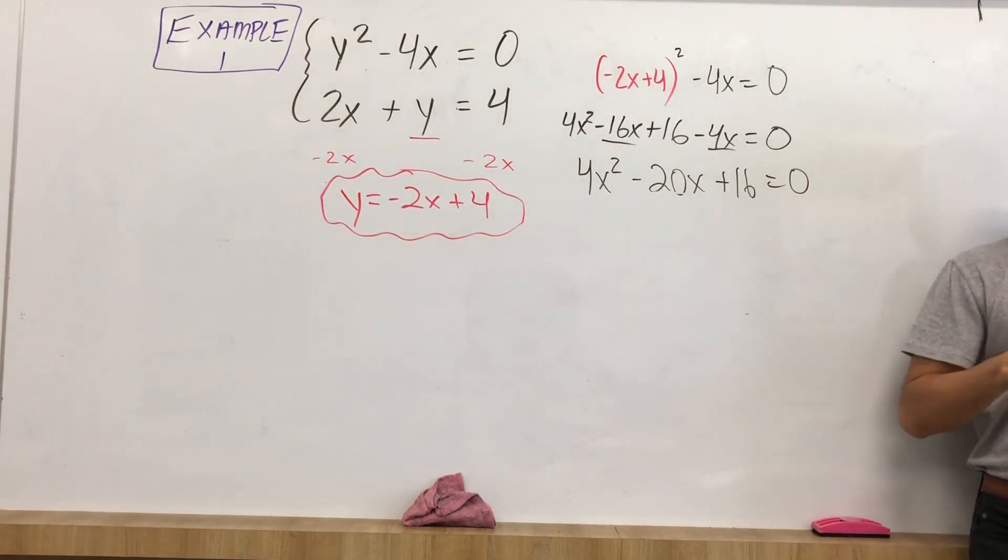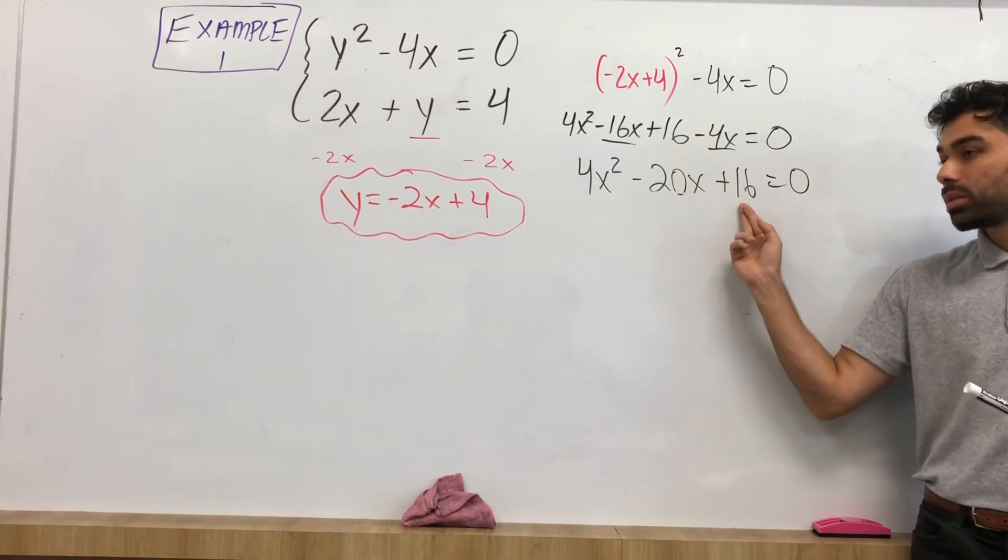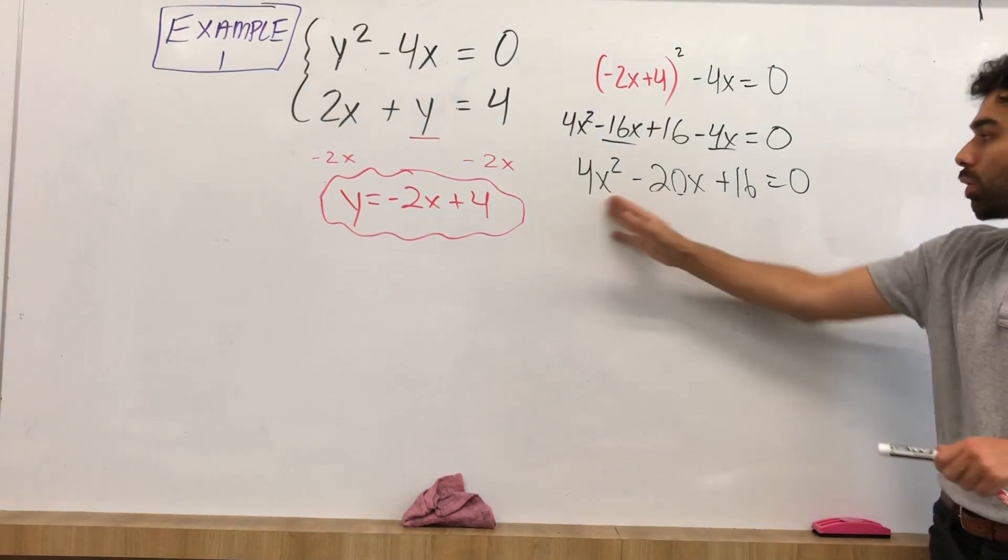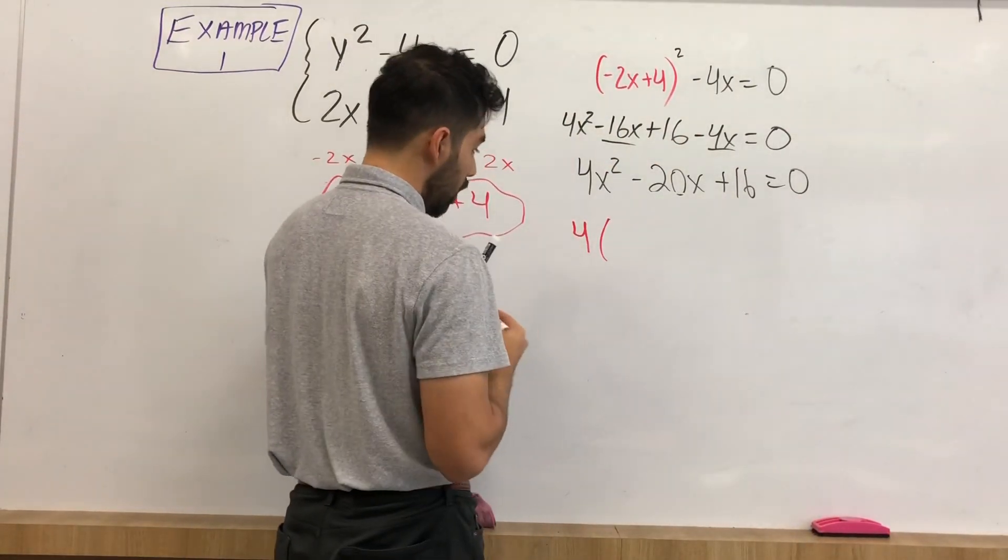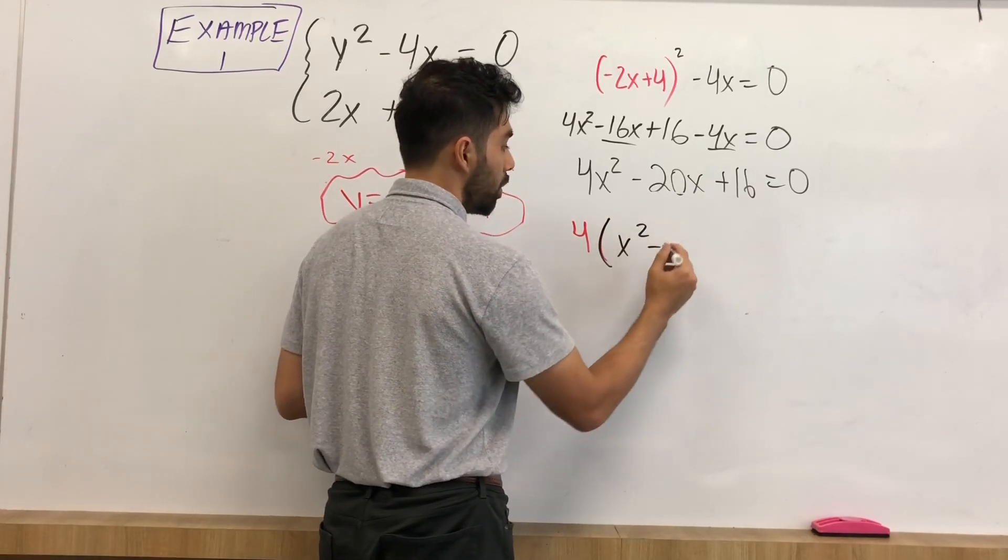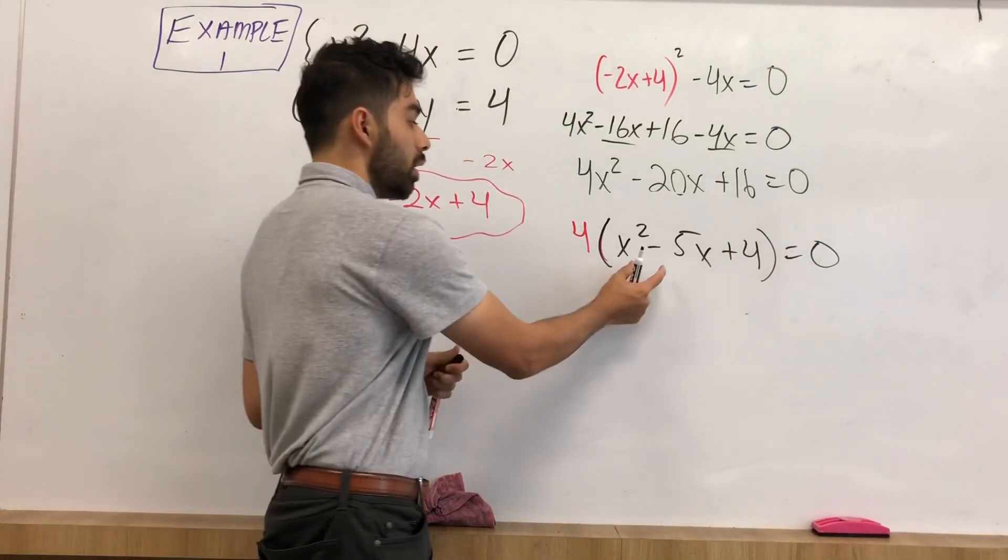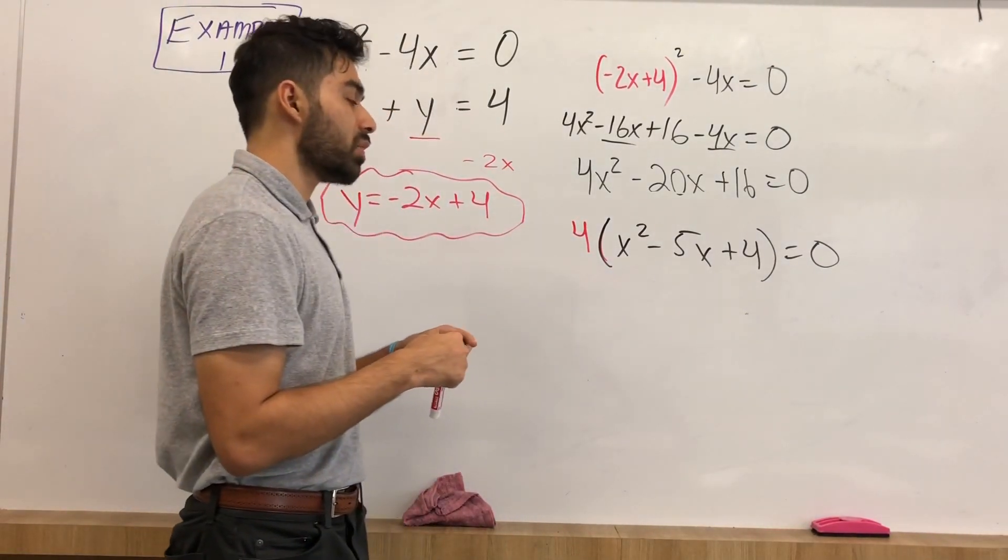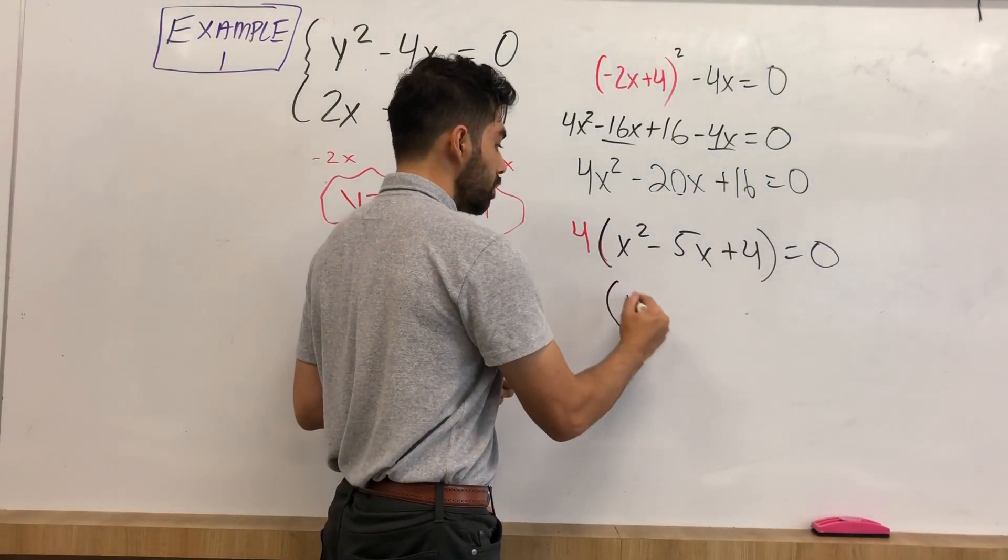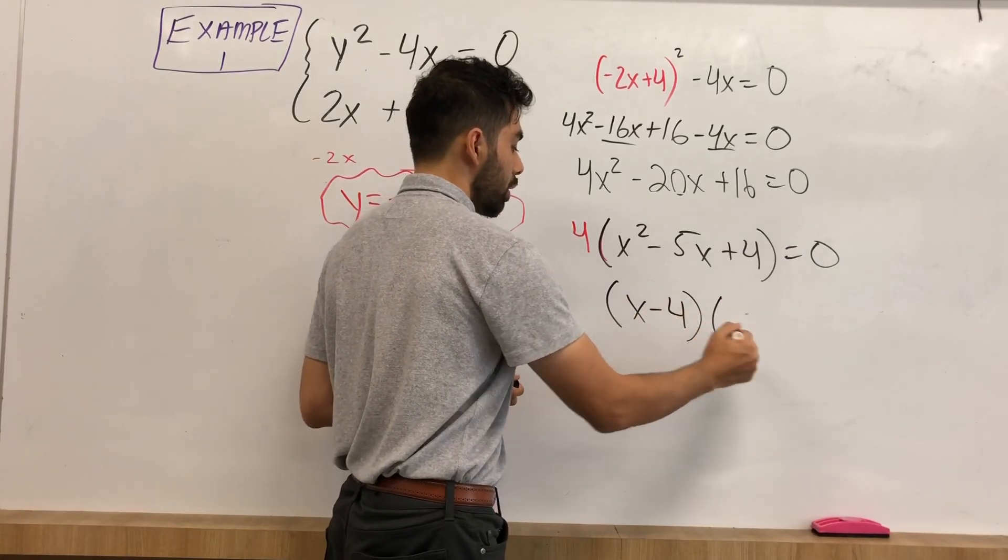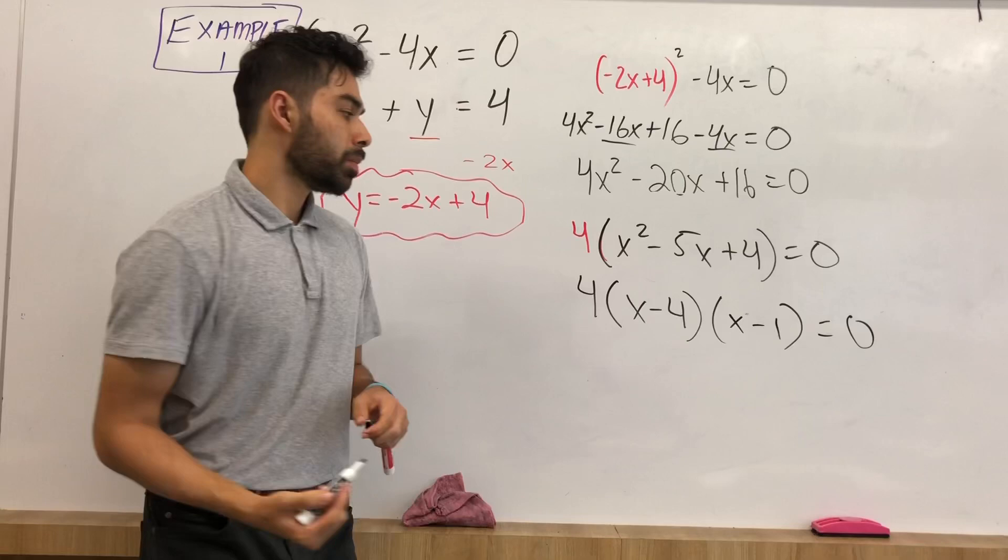Now make sure everything is equal to 0 because you will end up factoring. The number one rule for factoring is to find your GCF first. So between 4x squared, negative 20x, and plus 16, what is common? What is the greatest common factor between all three of these? Well, that would end up being 4. And I end up having x squared minus 5x plus 4 is equal to 0. Let's go ahead and factor now. We found our GCF. How do we factor x squared minus 5x plus 4? What multiplies to 4 and also adds up to negative 5? That would end up being x minus 4 and x minus 1.